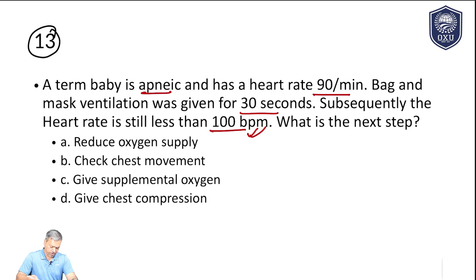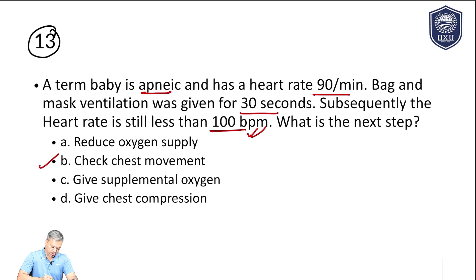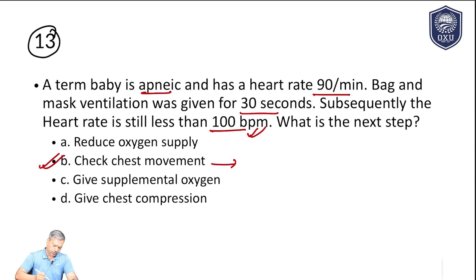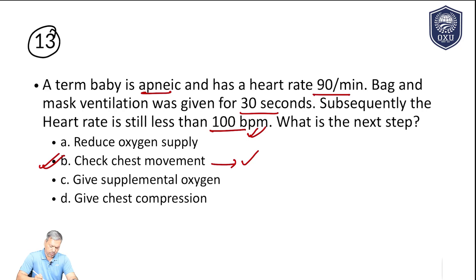Looking at the options: reduce oxygen supply is out — we never do that. The options are: check the chest movement, give supplemental oxygen, or give chest compressions. Checking the chest movement is the correct answer. We want to see how effective the bag and mask ventilation is — whether air is leaking from the side. Giving oxygen only is not enough, and chest compression is only indicated when, after correcting everything, the heart rate is still less than 60 per minute.